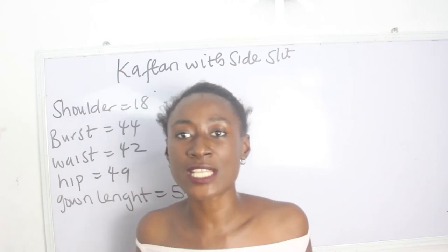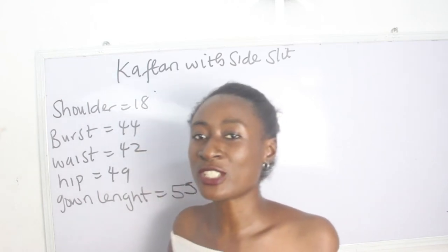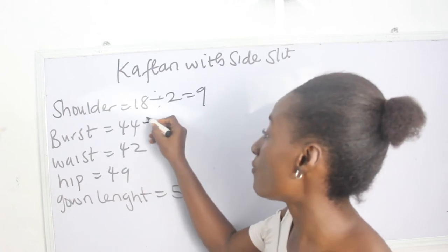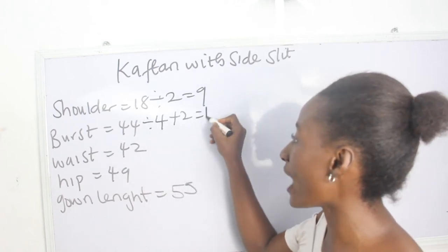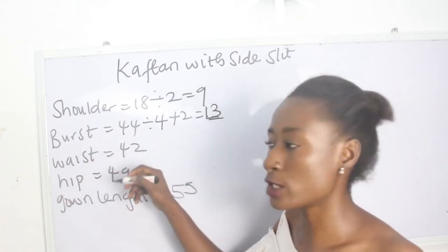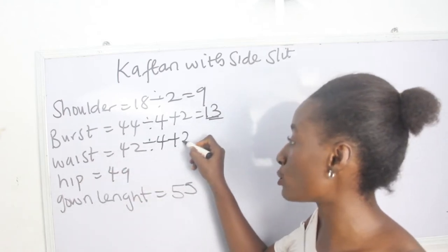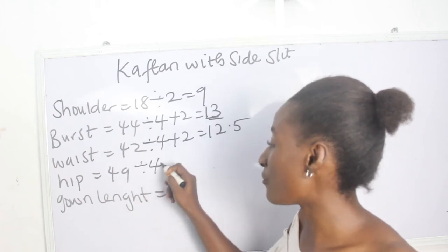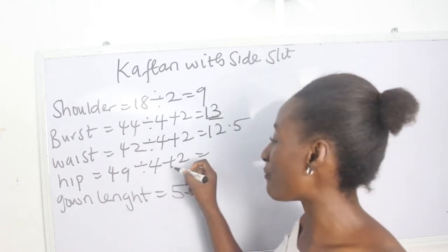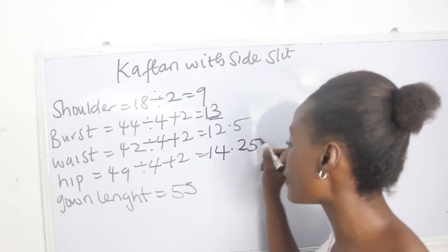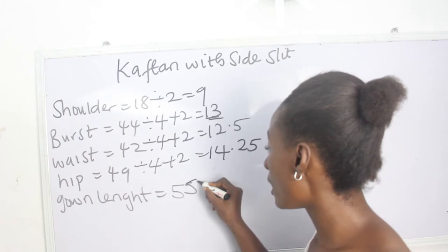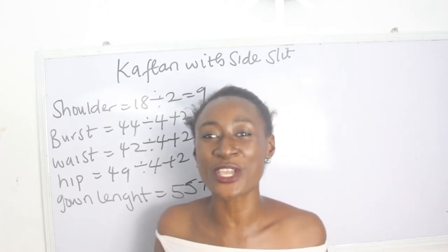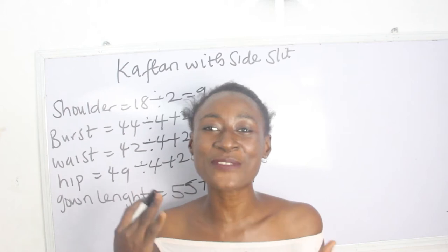Your shoulder measurement, bust, waist, hip, and your gown length. Our shoulder measurement is 18 divided by 2, we have 9. Our bust is 44, divided by 4 plus 2, we have 13 inches. Our waist is 42, divided by 4 plus 2, we have 12.5. Our hip is 49, divided by 4 plus 2, we have 14.25. Our gown length is 55 plus 2 inches, we have 57 inches. These are the measurements required in order for you to achieve your abaya or caftan with side slits.